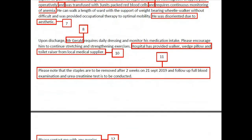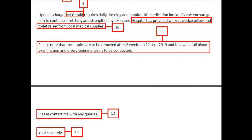In the second-last paragraph: 'Upon discharge, Mr. Gerald requires daily dressing and monitoring of medication intake. Please encourage him to continue stretching and strengthening exercises. Hospital has provided walker, wedge pillow and toilet raiser from local medical supplier.' The writer incorrectly used the patient's first name — it should be 'Mr. Baker.' The last sentence about equipment should be moved to a separate paragraph, and critically, the detail that the hospital has arranged a toilet raiser for two weeks from a local medical supplier is very vital and must be mentioned completely.